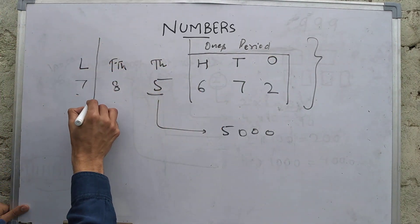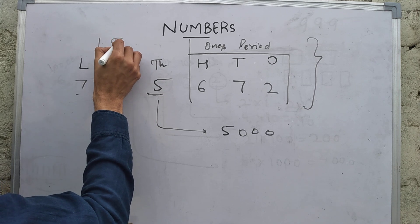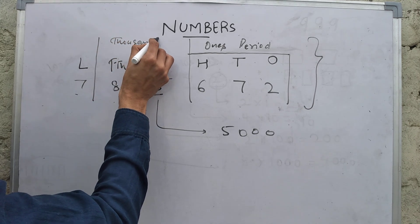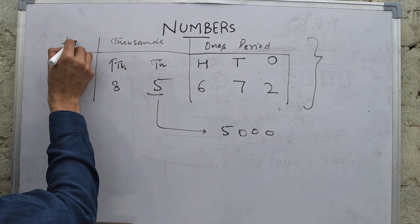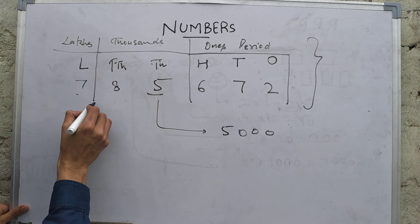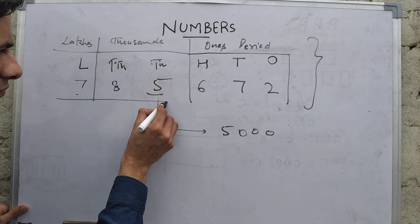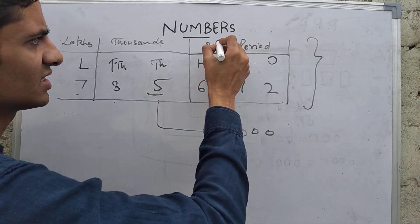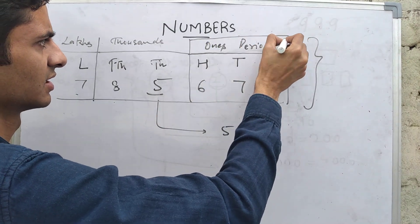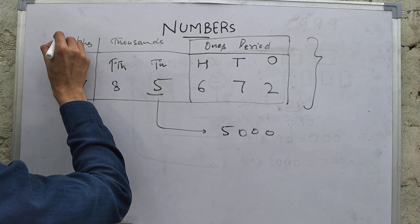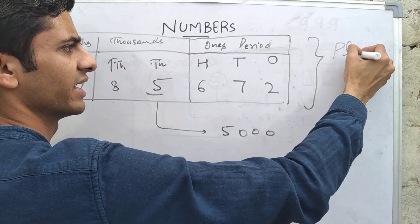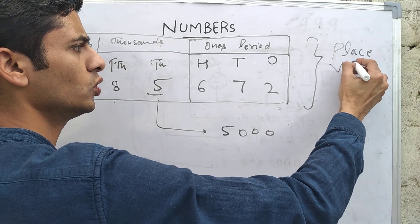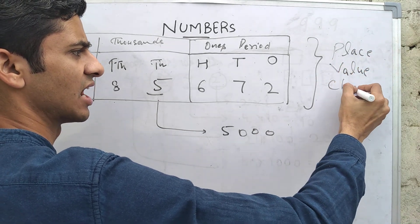This is known as thousands period, and this is known as lakhs period. This chart that I have made is called a place value chart.